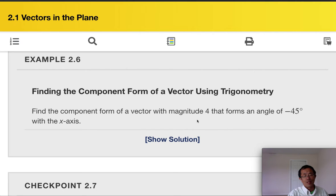So the question is, sometimes we do know the line, and we do know the direction. How do we find out the component form? So example 2.6, it is to find the component form of a vector with magnitude 4 and angle of negative 45 degrees.